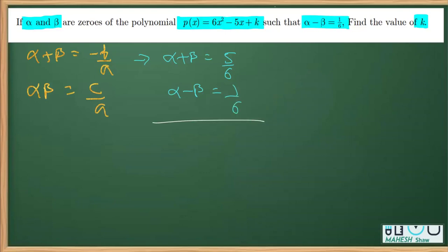We can use the elimination method to get the value of alpha. Alpha plus alpha is 2 alpha. On adding, 5 by 6 plus 1 by 6 is 6 by 6 which is 1. So alpha equals 1/2.